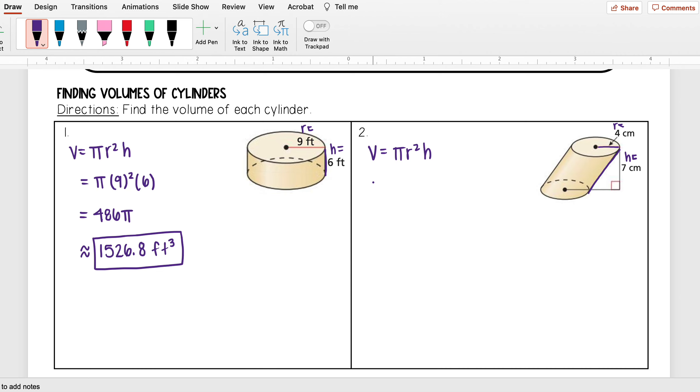So plugging those in I get that volume is equal to pi 4 squared times 7. 4 squared, I get 16, 16 times 7, and I get 112 pi. And then if I were to go ahead and multiply out the 112 times pi, I get that this is approximately 351.9 centimeters cubed.